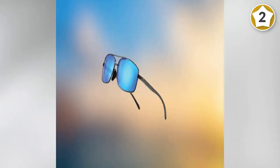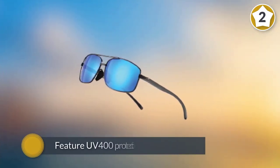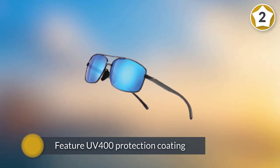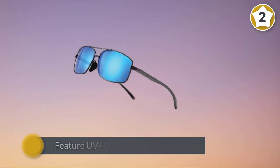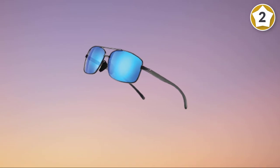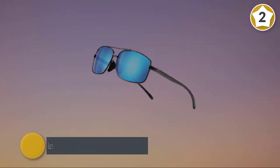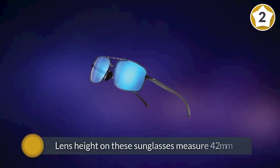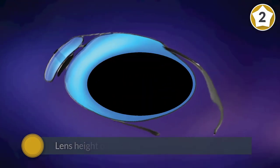The lightweight frames are constructed from aluminum-magnesium alloy, while the lenses feature UV-400 protection coating that blocks 100% of harmful UVA and UVB rays. The lens height on these sunglasses measures 42 millimeters, while the width is 62 millimeters.